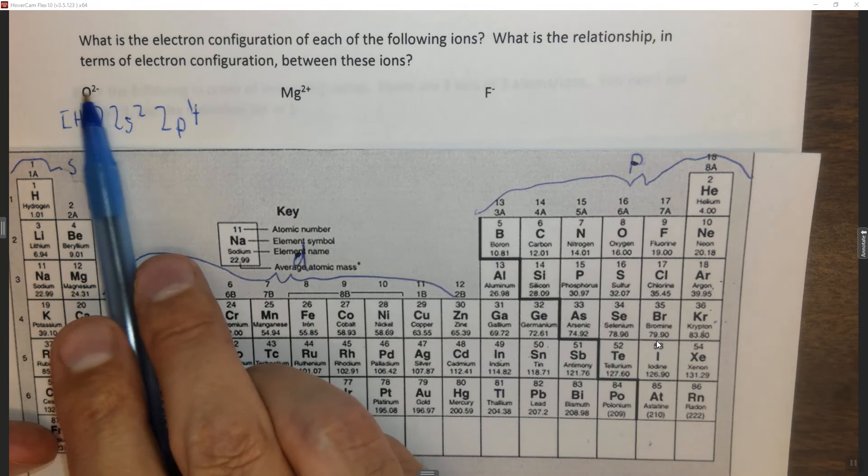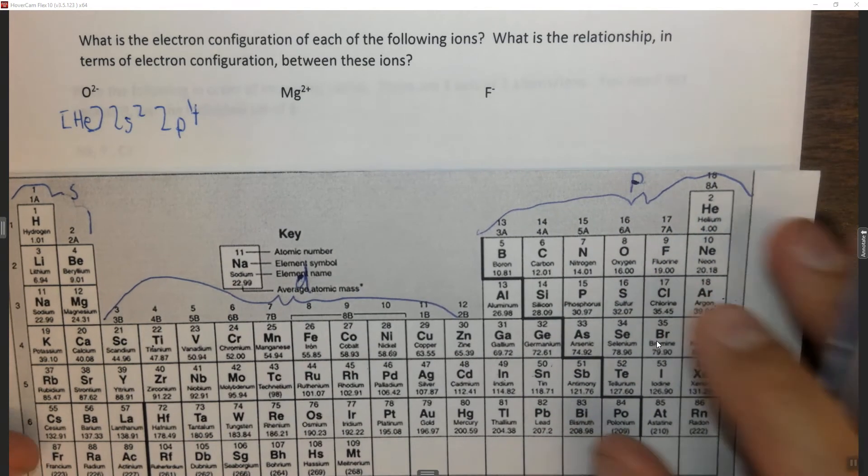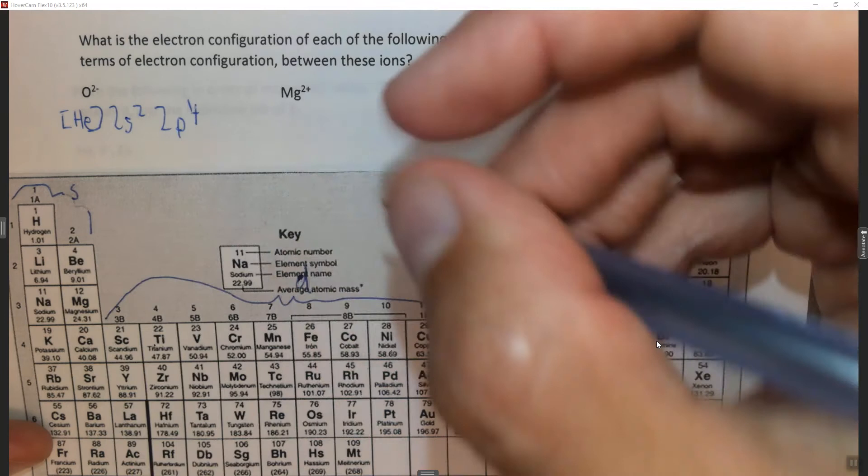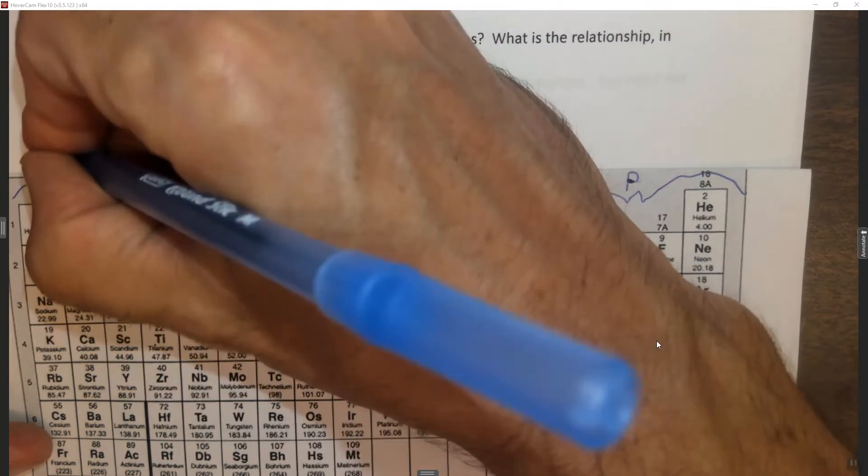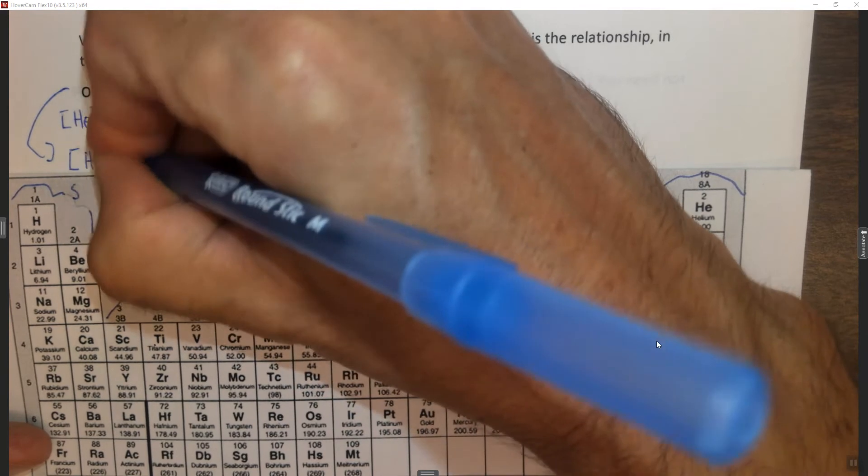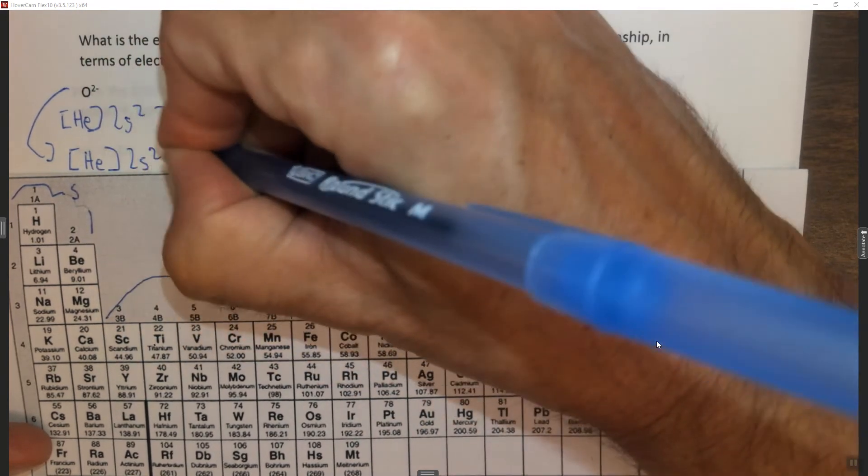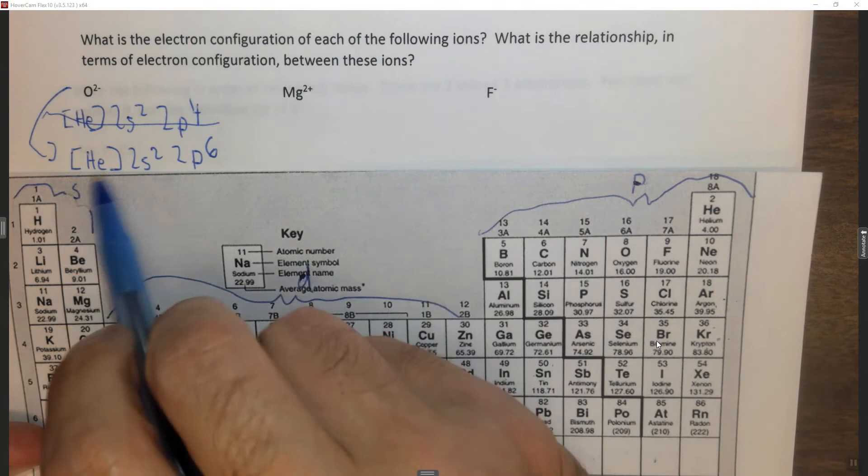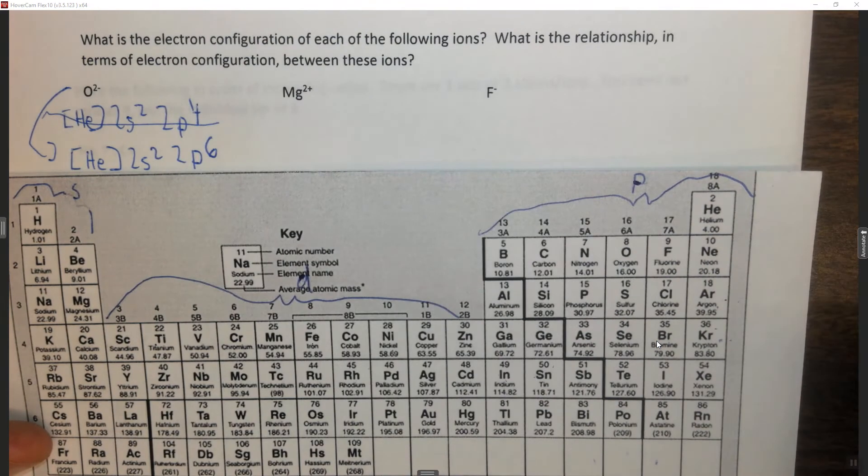But we don't have O, we have O²⁻, which means it's going to be having two additional electrons. Those two electrons go in the last orbital. So for O²⁻, it's He, 2s², 2p⁶. Alright, so this is for O, this is for what we're asked for, O²⁻.